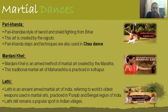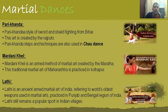The first one is Parikhanda — a style of sword and shield. As you can see in the photo, the person has a sword in one hand and a shield in the other. This art is from Bihar and is a Rajput variant. The steps and techniques seen in Parikhanda are also used in the Chau dance.